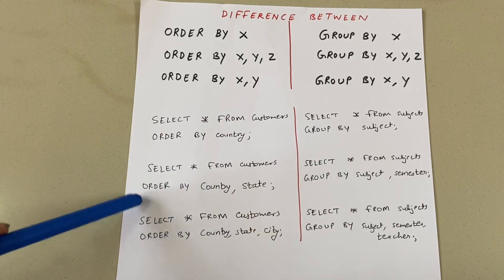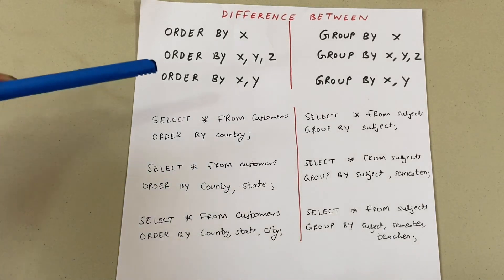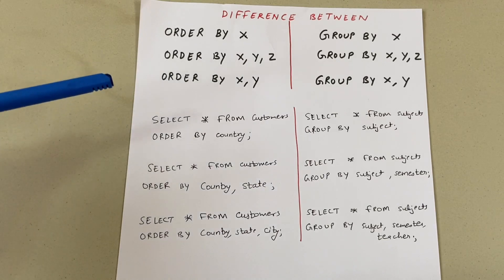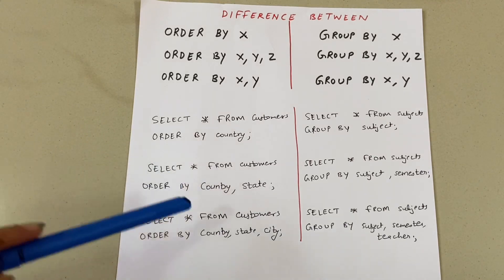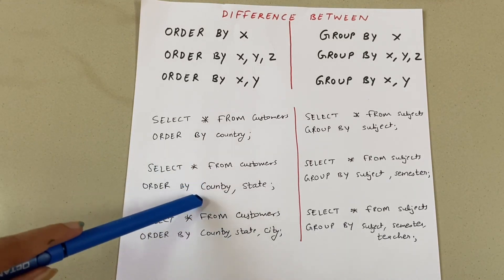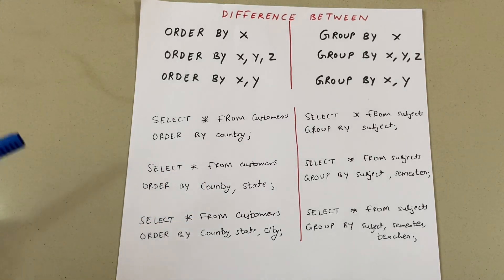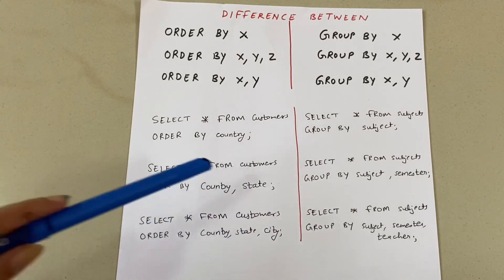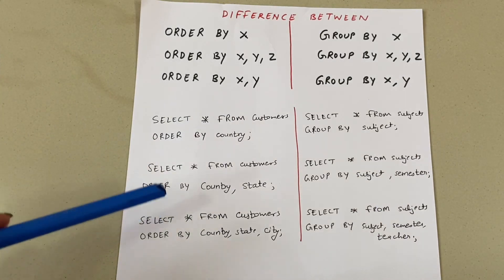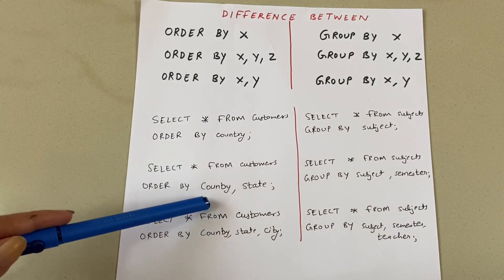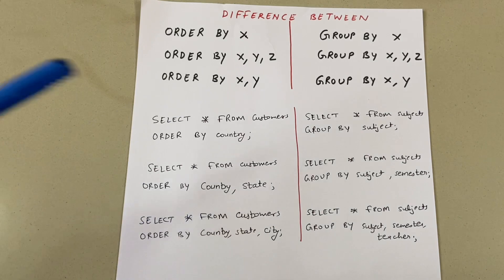With SELECT * FROM customers ORDER BY country, state — if your rows have the same country name, then which column should you refer to in order to sort further? After country, you will use state to sort it. So if two rows have the same country, then order it by state.